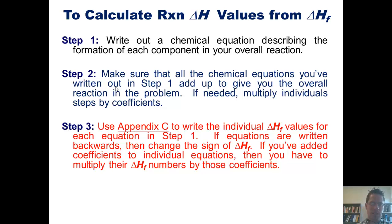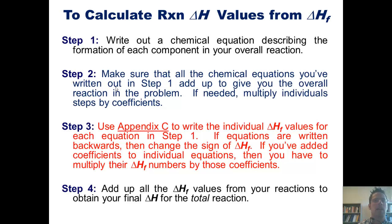Step 3: Use Appendix C from our text to write the individual enthalpy of formation values for each equation from step 1. If the equations are written backwards, then we change the sign from negative to positive or vice versa. If we've added coefficients to individual equations, then we have to multiply their individual enthalpies of formation by those coefficients. And Step 4: Add up all of the enthalpies of formation values from our reactions to obtain the final and complete ΔH for the total reaction.